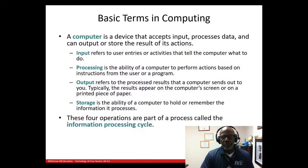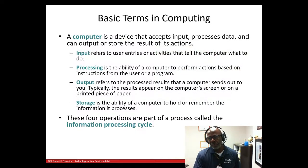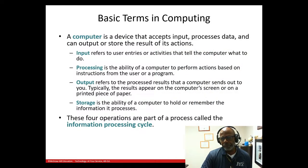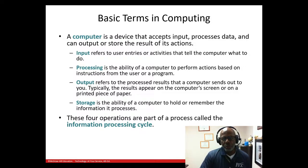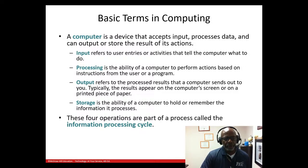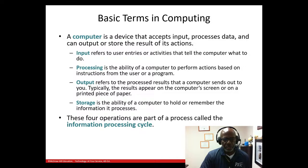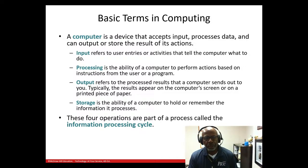A computer is just a device that accepts input, processes data, and can output or store the results. There are four types of actions a computer can perform: input — you tell it what to do; process it; output the result; and store it.